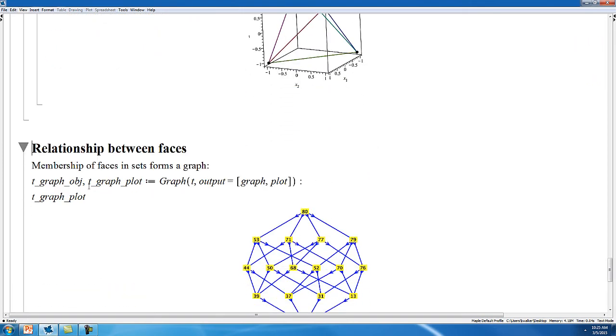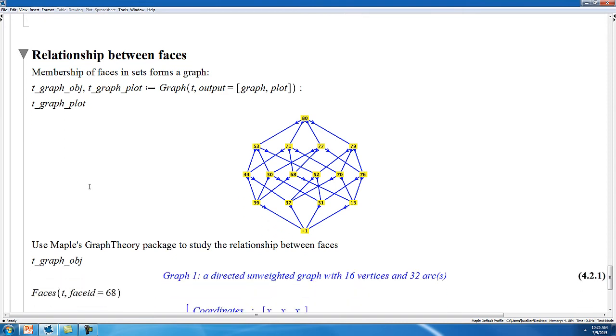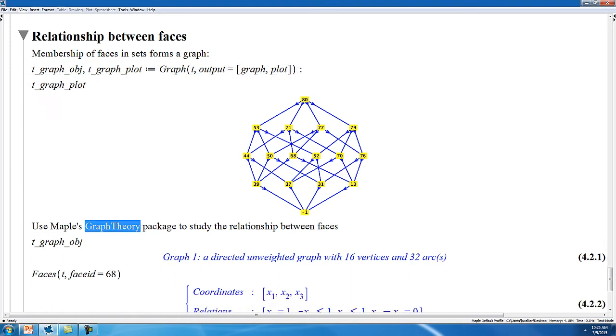You can investigate the relationship between faces, because as you look at the faces of the set, you can also look at the faces of those faces, and the faces of those faces, etc. And these relationships form a graph. Using the graph command in the package, you can get the graph object and a plot of the set's graph. And this graph object can be manipulated using the graph theory package in Maple, so that you can study the relationship between the faces of different sets.